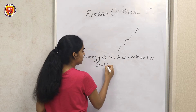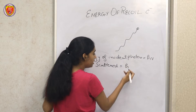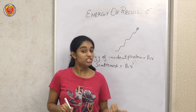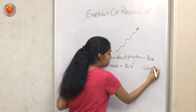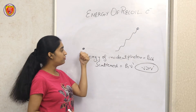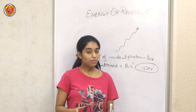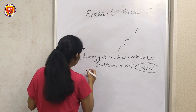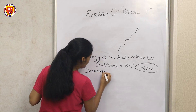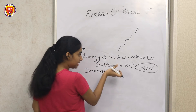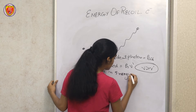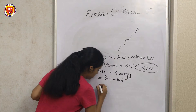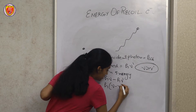The decrease in energy of the incident photon is: initial minus final = hν − hν' = h(ν − ν'). This is equation 1. For the electron, the rest mass energy is m₀c², and the relativistic energy is mc². The kinetic energy of the electron is mc² − m₀c² = (m − m₀)c². This is equation 2.